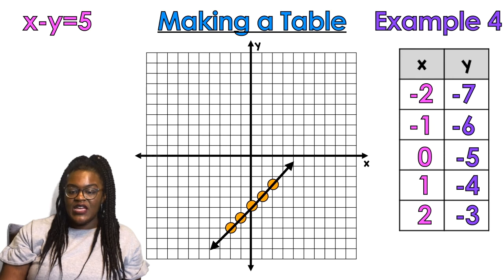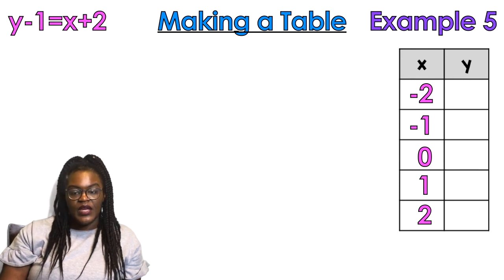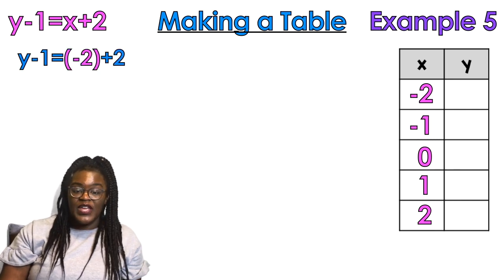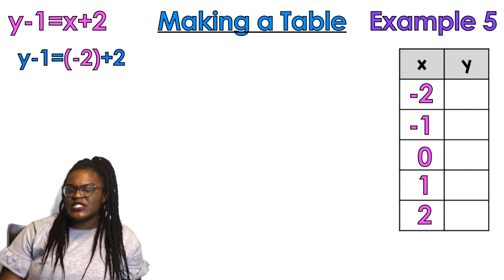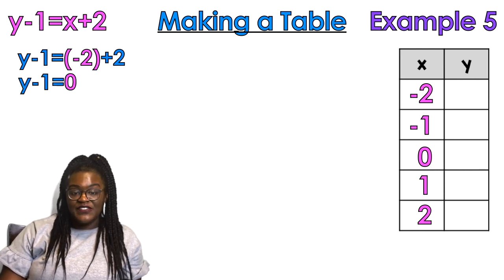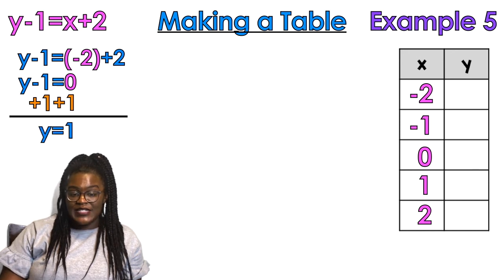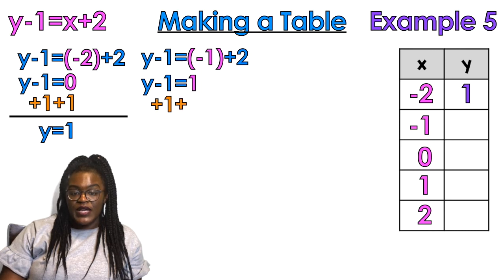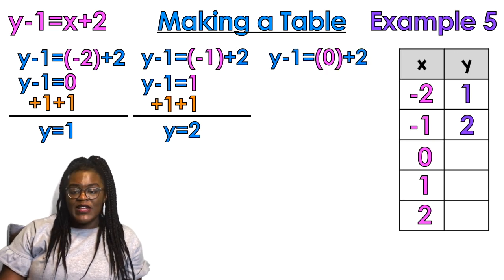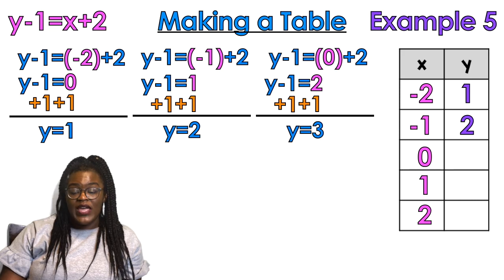Two more examples — we got this. Same x values — at least we're consistent. Plugging in negative 2. Our equation looks a little funny this time — I think it's in point-slope form. Negative 2 plus 2 is 0. Add 1 to both sides to get y by itself — we're isolating y — so y is 1. Then y minus 1 equals negative 1 plus 2: negative 1 plus 2 is 1, add 1 to both sides, y equals 2. Then y minus 1 equals 0 plus 2: 0 plus 2 is 2, plus 1 on both sides, y equals 3.